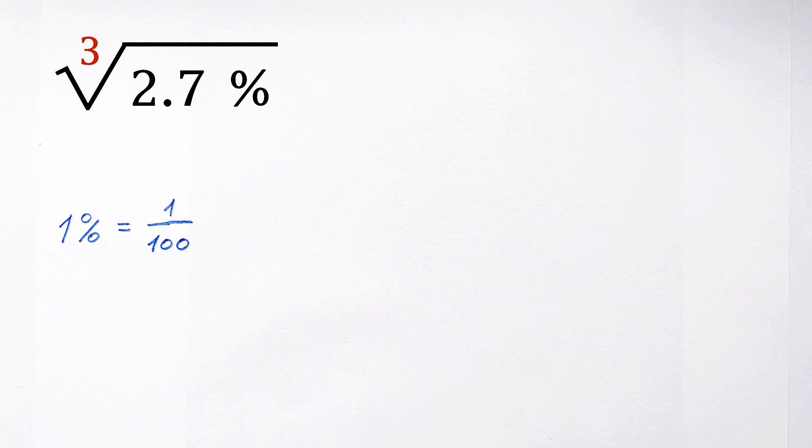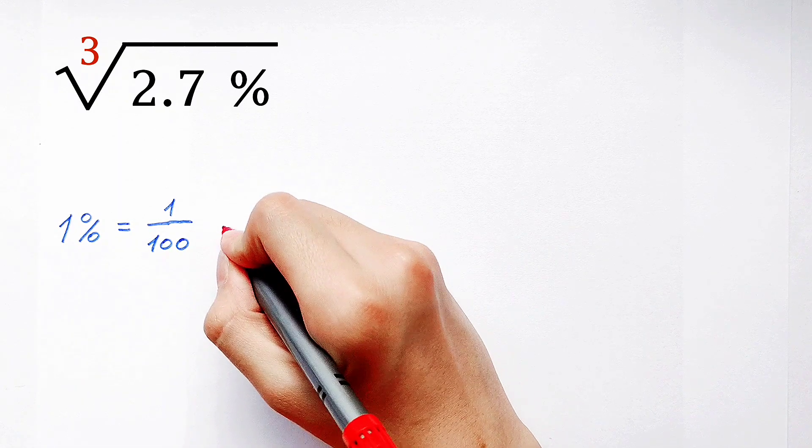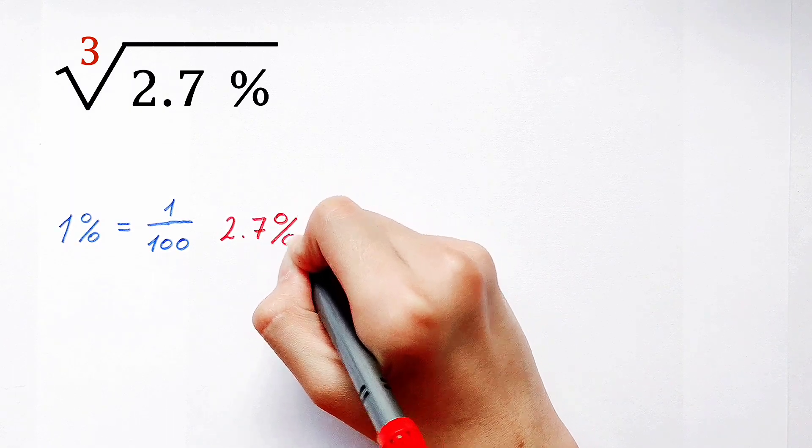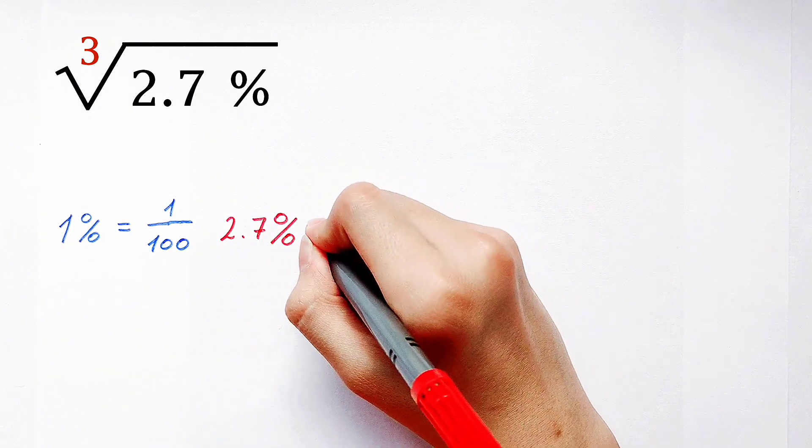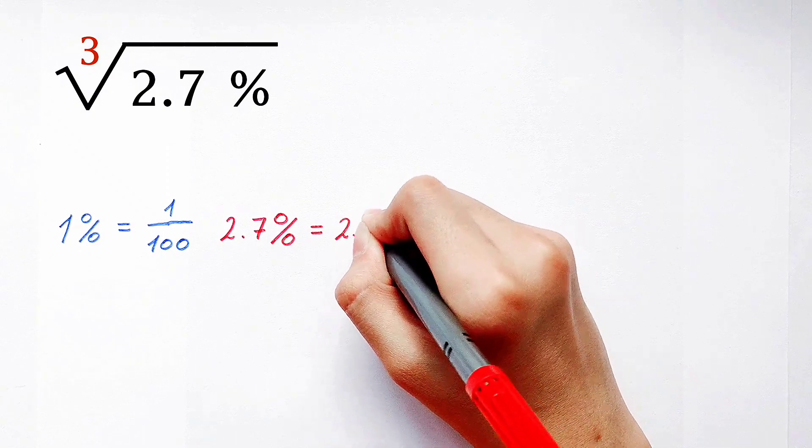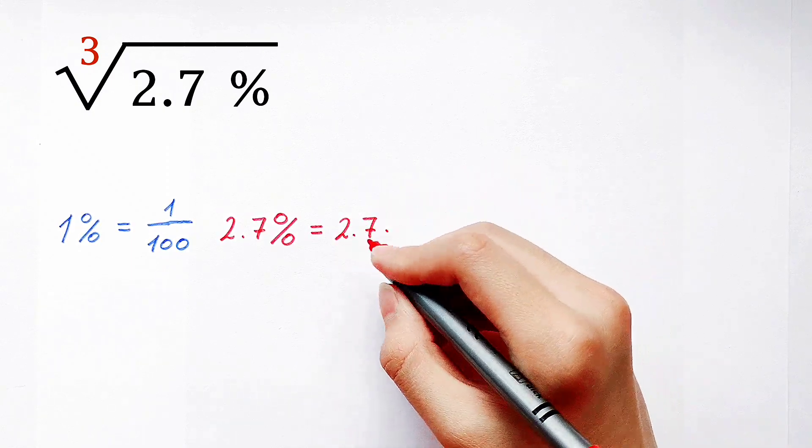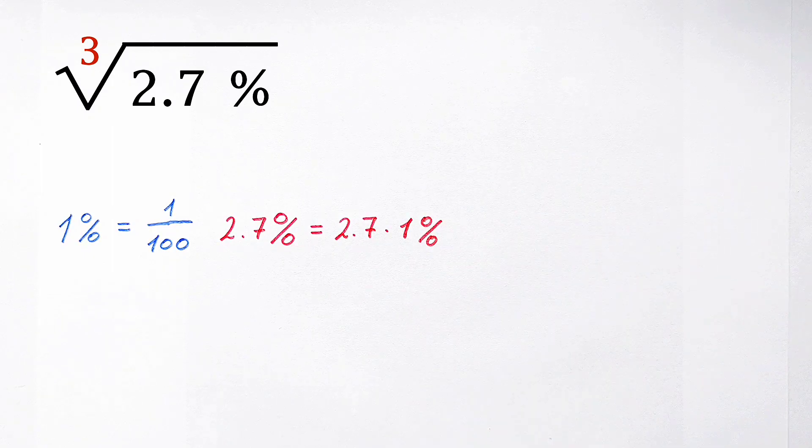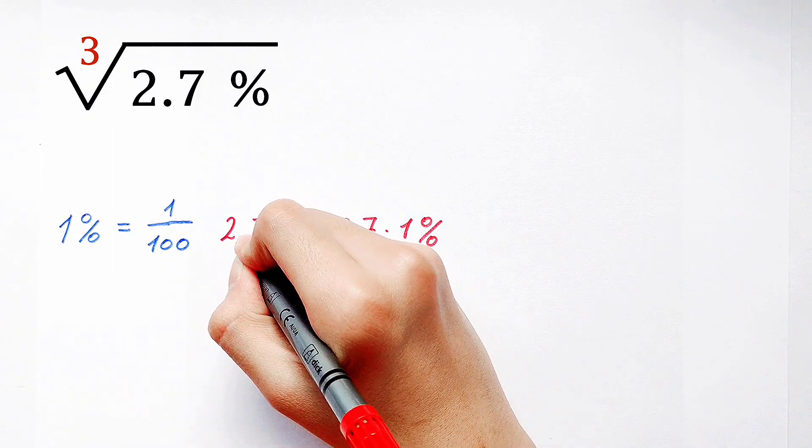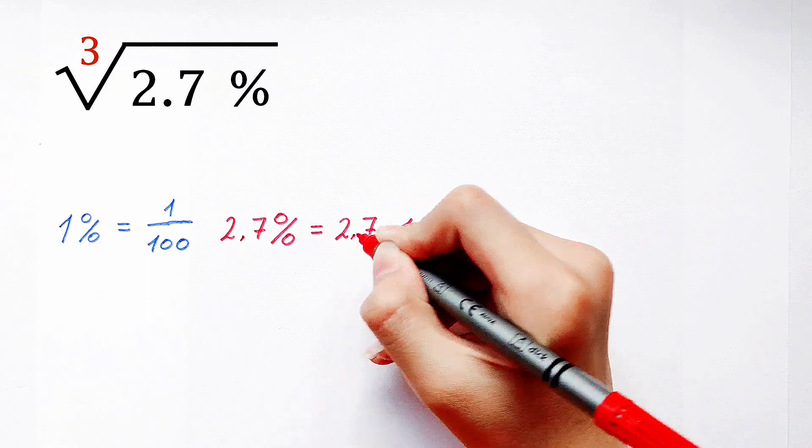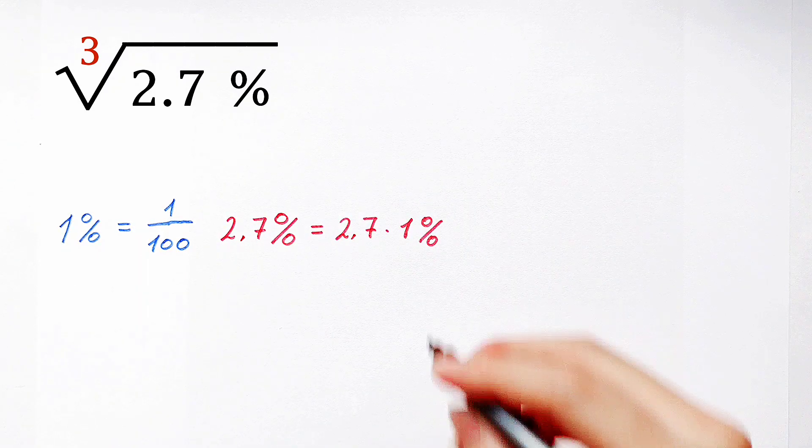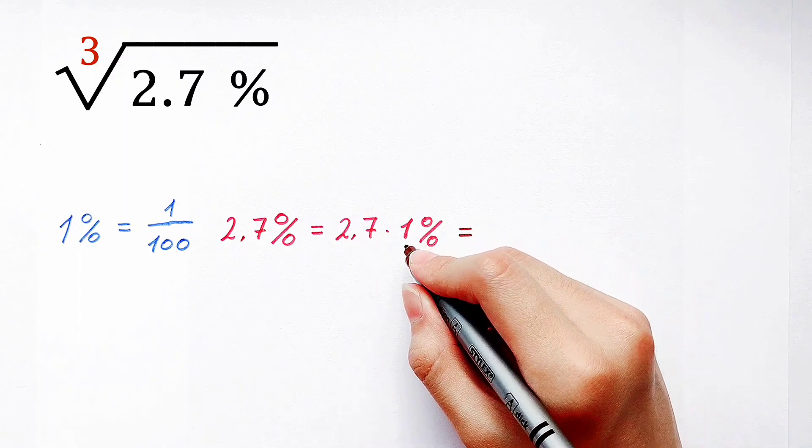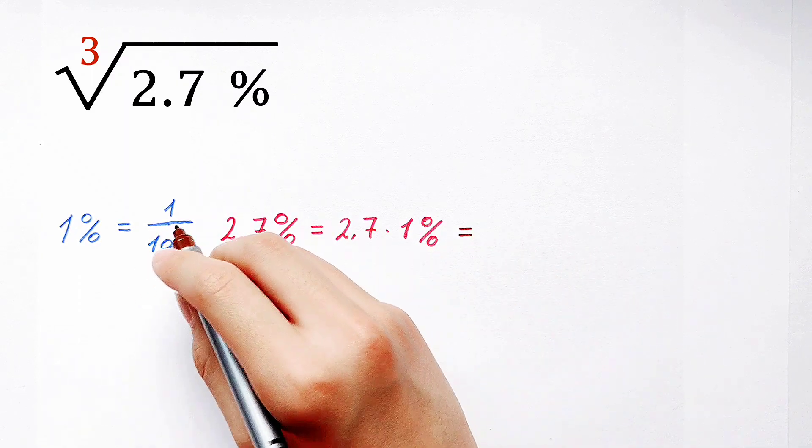So 1 percent is 1 over 100, and 2.7 percent is 2.7 times 1 percent. So now 2.7 times 1 percent.